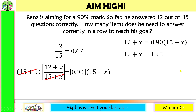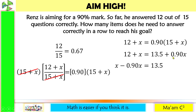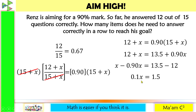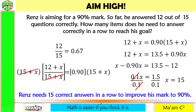Combining like terms: x − 0.90x = 13.5 − 12, so 0.1x = 1.5. Dividing both sides by 0.1 gives x = 15. So Renz needs 15 correct answers in a row to improve his mark to 90%.